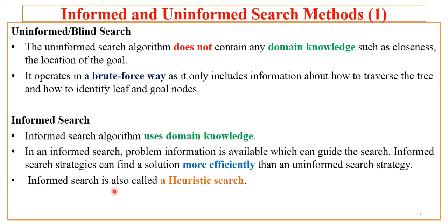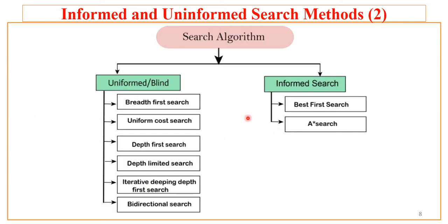In this discussion we will not implement any of these methods but will list the algorithms used exhaustively in AI. Uninformed/blind search algorithms include: breadth-first search, uniform cost search, depth-first search, depth-limited search, iterative deepening depth-first search, and bidirectional search. Informed search algorithms include best-first search and A* (A-star) search, which use heuristic information.